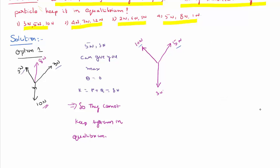Now this 10 and 5 at the best can give a maximum of P plus Q, which is 15 Newton, and a minimum of P minus Q when the angle is 180 degrees, that is 10 minus 5.